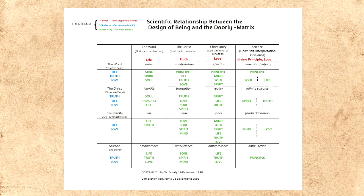A master matrix that will make us a master if we master it — in the best sense, that is, to become one with it. When we look at the I index, we see it is the self-declaration of God. The Christ was changed to the self-translation of God — God's own self-translation of himself. In Christianity it is God's infinite self-reflection. And in science, God's self-interpretation as science.